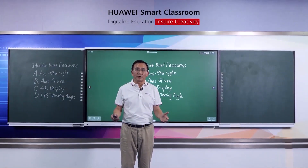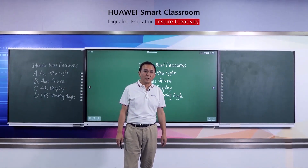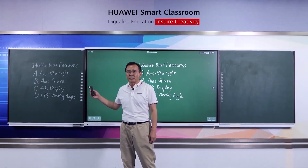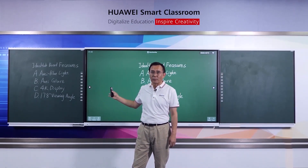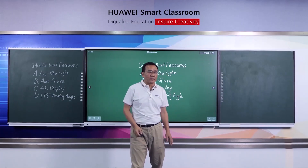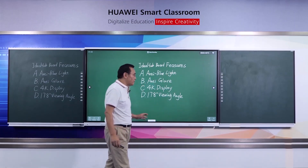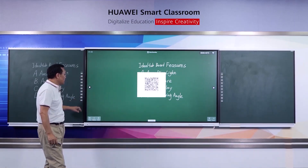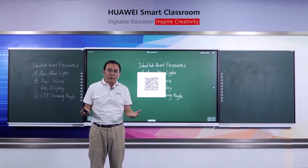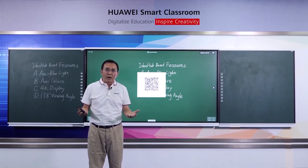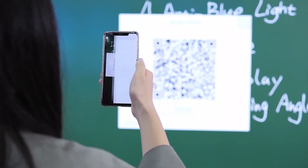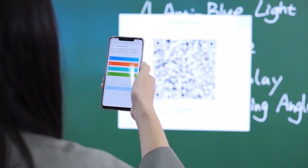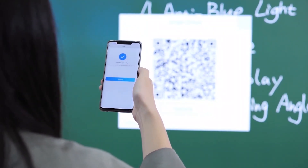Teachers can give a quiz at any time during the class. For example, I give a single choice question on the blackboard behind me and I type the vote command. The Ideal Hub will generate a QR code, and students can scan the QR code with their mobile phone to answer the question.